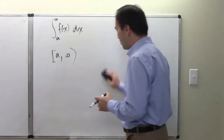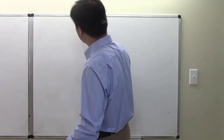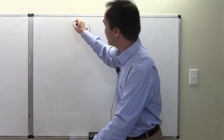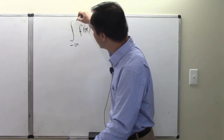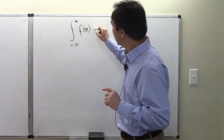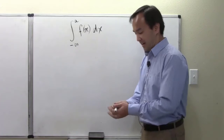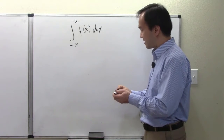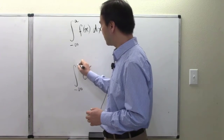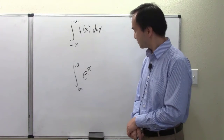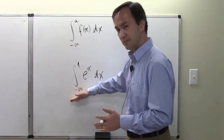There will surely be the case where the accumulation goes from minus infinity to a finite upper value — the upper end is finite but the lower end is infinite. For a quick demonstration, consider the function e to the x from minus infinity to zero.